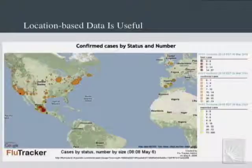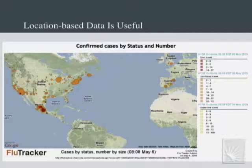Location-based data is useful. Those watching the news or working on pandemic flu questions know that if I can put a map up showing where all the cases are, it gives us decision-making capability. So it's of great value. The question is about the fidelity we're thinking about.